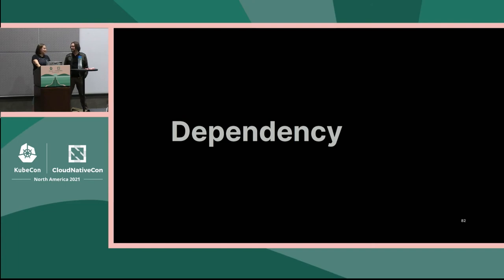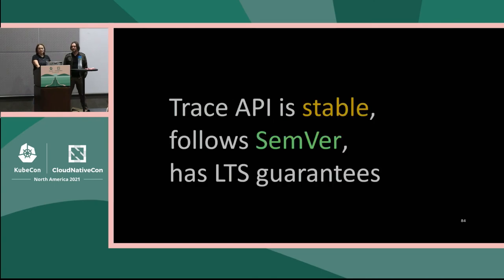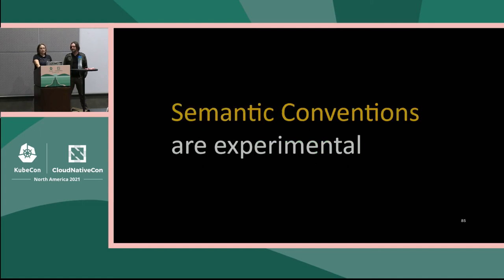Let's talk dependency. You take a dependency on the OpenTelemetry API — it's a tiny package, it is stable, it follows SemVer 2, and it has long-term support guarantees. OpenTelemetry takes API stability seriously. However, semantic conventions are experimental — they're a soft contract on telemetry, and attribute names and which attributes to include may and likely will change. In some cases even the span structure may change. It doesn't break your runtime, but it breaks some user expectations on the backend.